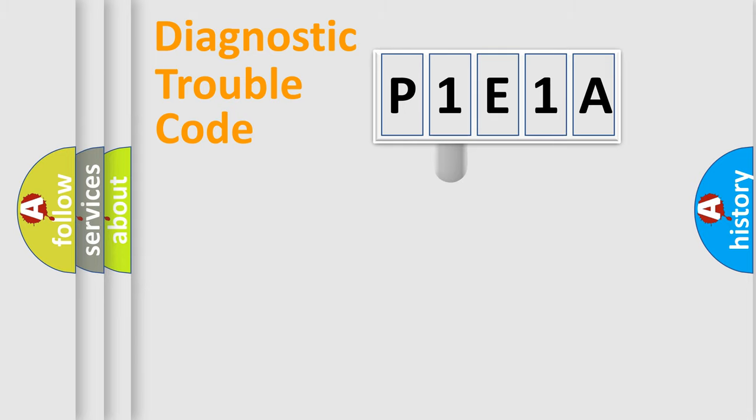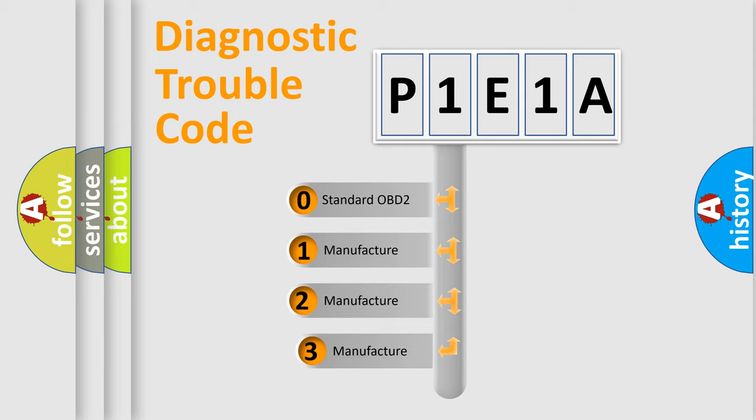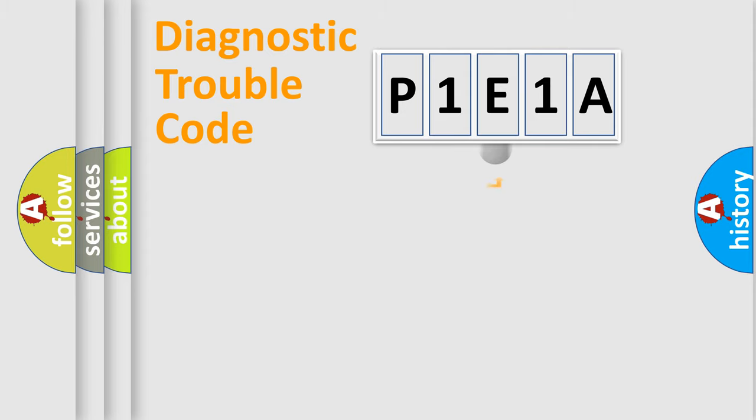This distribution is defined in the first character code. If the second character is expressed as zero, it is a standardized error. In the case of numbers 1, 2, or 3, it is a more specific expression of the car-specific error.